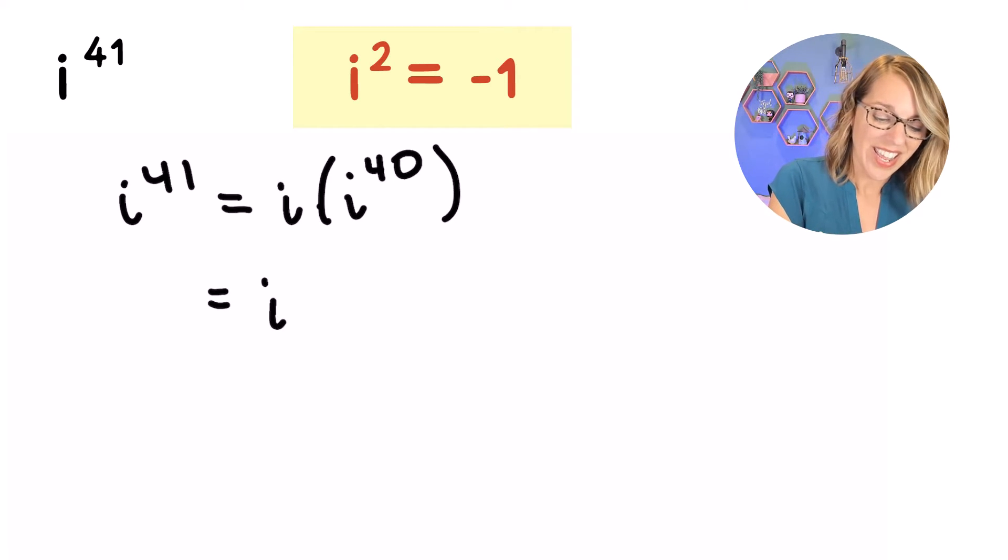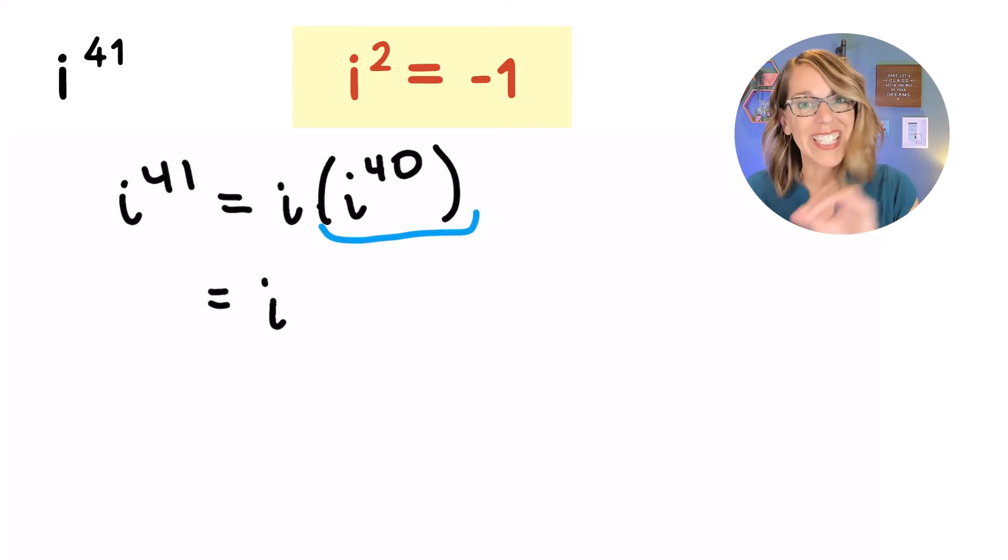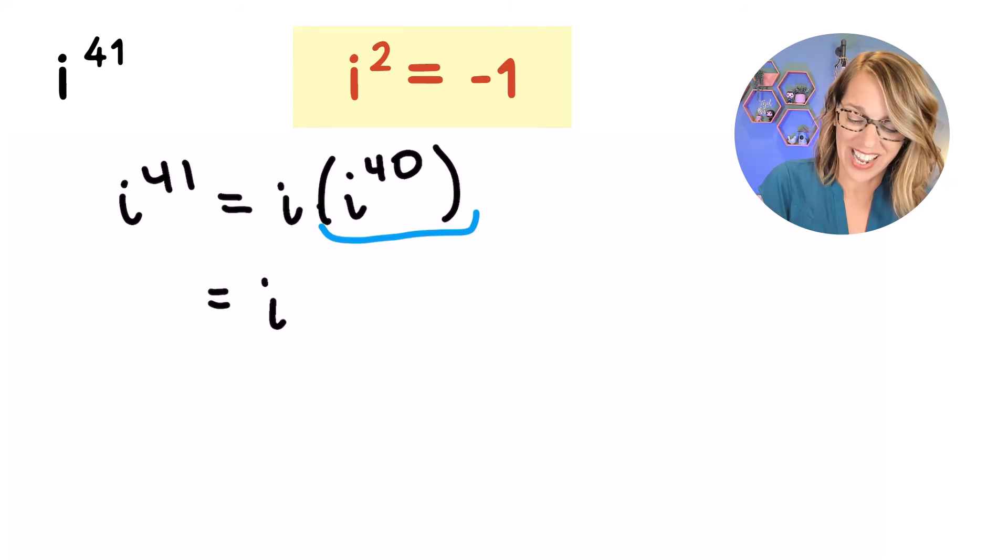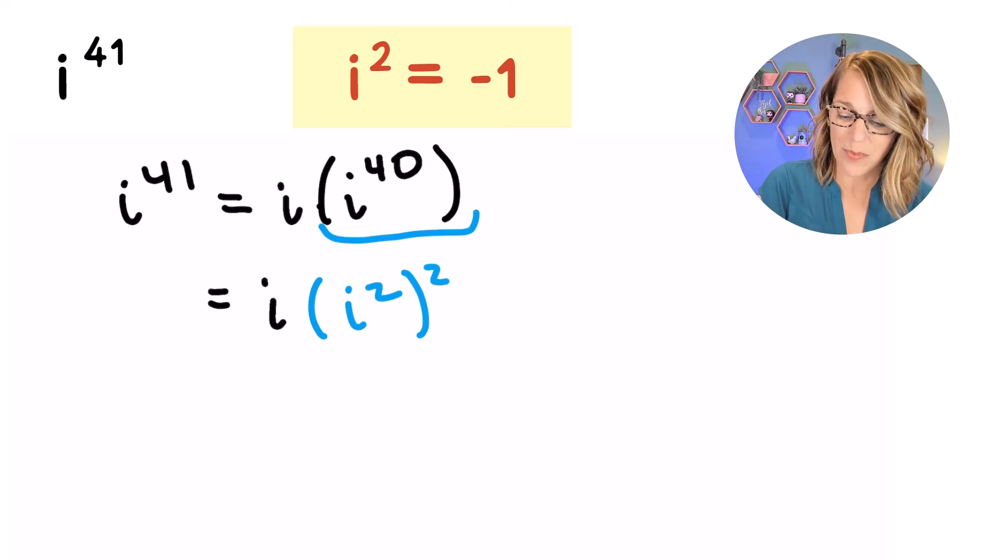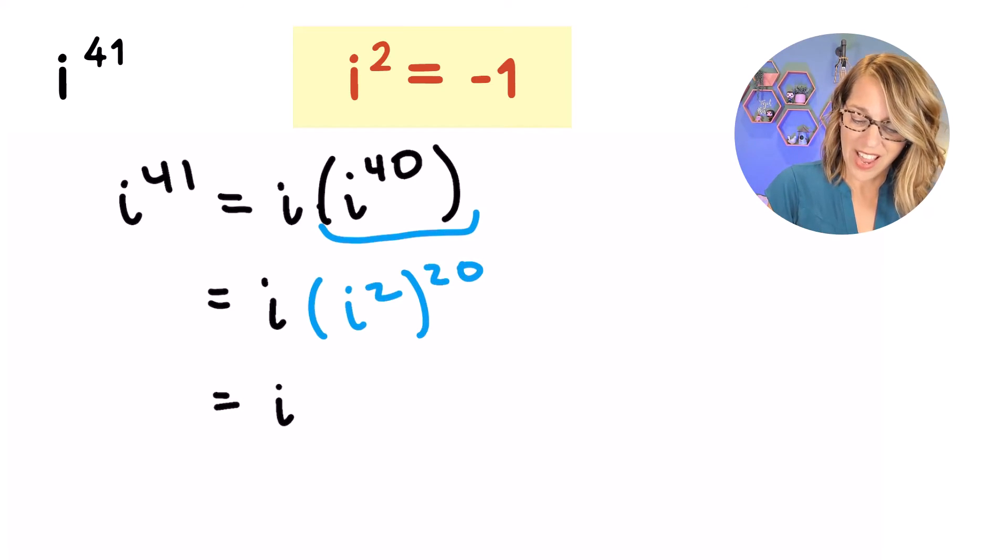But what I've done is isolate an even power, so I can leave my i on the outside. And then with my i to the 40th, I can play the same game that I played in the last examples. I'm going to write that as a power of i squared. 40 divided by 2 is 20, so I end up with the 20th power there. I still have my i on the outside.